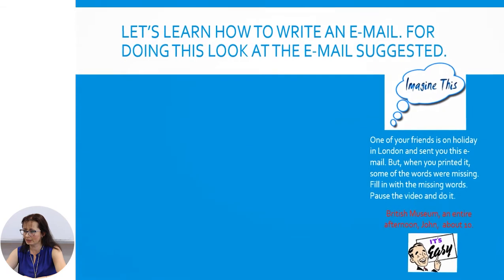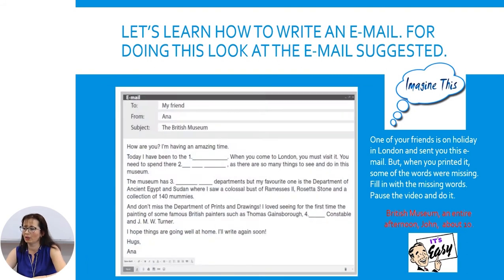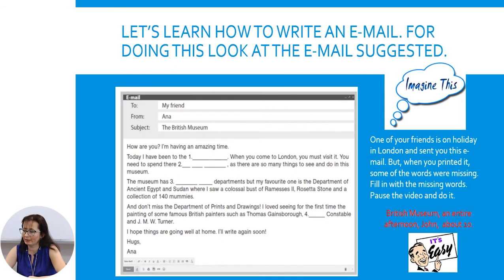After you have done all this, let us learn how to write an email. Look at the email suggested. Imagine that one of your friends is on holiday in London and sent you this email. But when you printed it, some of the words were missing. Fill in with the missing words. These are the missing words: British Museum, an entire afternoon, June, about 10. Pause the video and fill in the exercise.